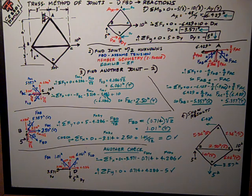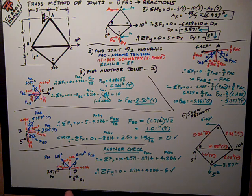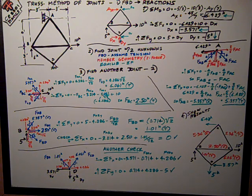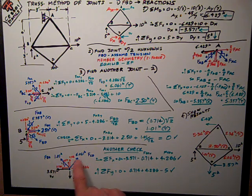I even have another way of checking it. I can go down to joint D, which I could have started at, because it only had two unknowns also, because I'd solved for the reaction forces, which I've shown in black here. And I can check if the sum of forces in the x direction.